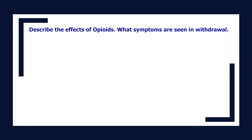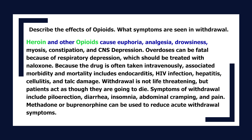Describe the effects of opioids and withdrawal symptoms. Heroin and other opioids cause euphoria, analgesia, drowsiness, miosis, constipation, and CNS depression. Overdoses can be fatal due to respiratory depression, which should be treated with naloxone. Because the drug is often taken intravenously, associated morbidity includes endocarditis, HIV infection, hepatitis, cellulitis, and talc damage. Withdrawal is not life-threatening, but patients act as though they are going to die. Symptoms of withdrawal include piloerection, diarrhea, insomnia, abdominal cramping, and pain. Methadone or buprenorphine can be used to reduce acute withdrawal symptoms.